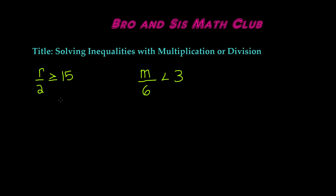So here we have our first example, which is r divided by 2 is greater than or equal to 15. We see that the variable r is being divided by 2. Now we don't know the value of r, and when you're solving an inequality, you're not going to get the exact value of the variable. Instead, you're just going to get whether r is greater than or equal to 17, or r is less than 3.84, and such that.